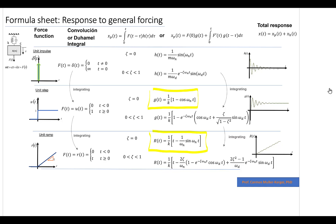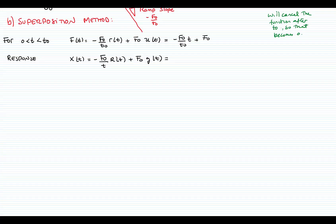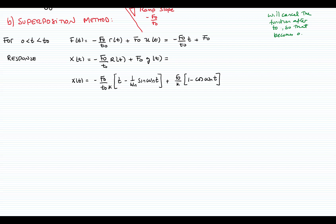The response for a ramp is (1/k) · [t − (1/ωₙ) sin(ωₙ t)], and the response for a step function is (1/k) · [1 − cos(ωₙ t)]. Combining these gives the response for the first time interval, 0 < t < t₀.